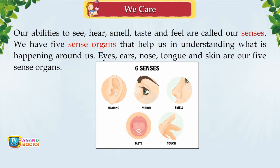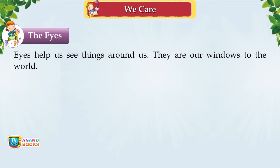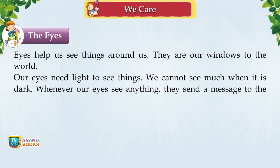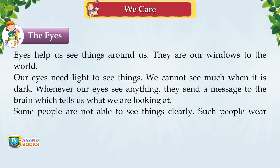The Eyes. Eyes help us see things around us. They are our windows to the world. Our eyes need light to see things — we cannot see much when it is dark. Whenever our eyes see anything, they send a message to the brain which tells us what we are looking at. Some people are not able to see clearly and wear spectacles, which help them see better.